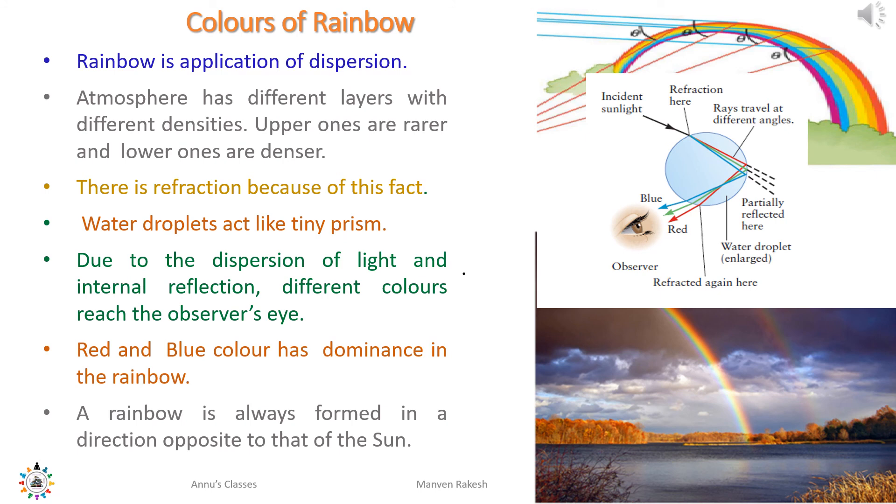After rainfall there are tiny water droplets in the atmosphere, and those water droplets act like prisms. The light disperses through these tiny prisms and gives us the rainbow effect. These rainbows seen in the sky have dominance of red and blue colors. A rainbow is always formed in a direction opposite to that of the Sun.